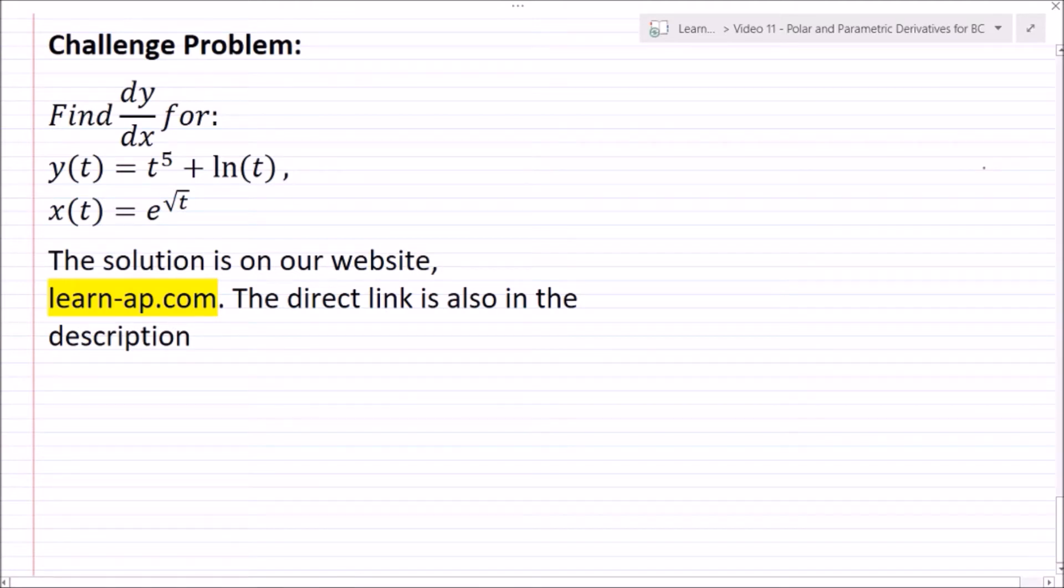Alright, so that brings me to today's challenge problem. Find dy/dx for y(t) = t^5 + ln(t) and x(t) equals e^(√t). The solution to this is on our website learn-ap.com. I'll also include a direct link in the description.